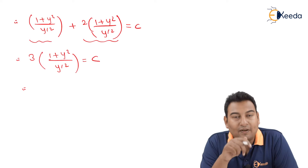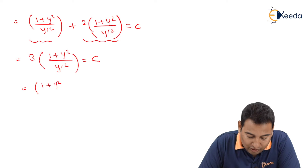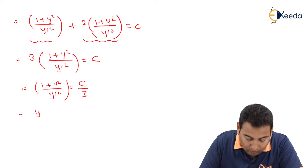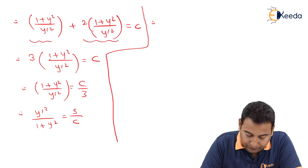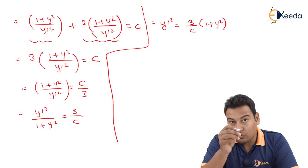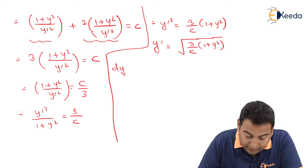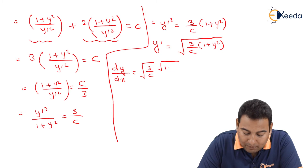Keeping y' on the left side, we get (1 + y²)/y'² = c/3. Inverting both sides: y'²/(1 + y²) = 3/c. Therefore y'² = (3/c)·(1 + y²). Taking the square root: y' = dy/dx = √(3/c) · √(1 + y²).